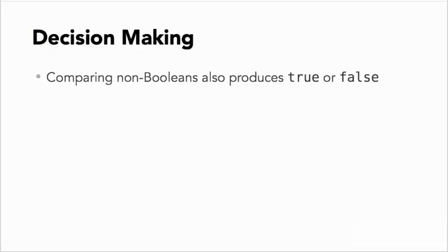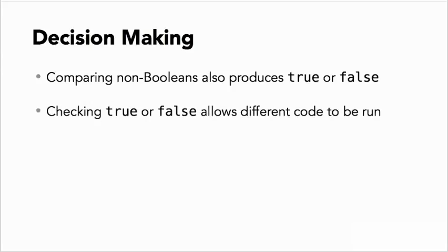Decision making in PHP can also be controlled by comparing two non-Boolean values, for example, whether one number is greater than, equal to, or less than another. This also produces true or false. And based on whether something is true or false, different code can run. The rest of this chapter explores how to use this branching logic in PHP.